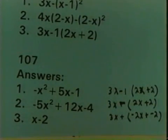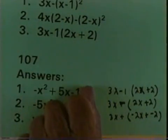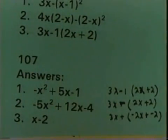So the FOIL method would not be appropriate, because I'm not multiplying by 3x minus 1. I'm only multiplying by 1.